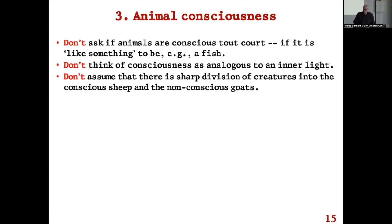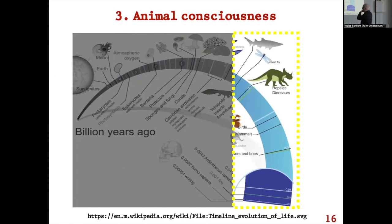Don't think of consciousness as analogous to an inner light. Don't assume a sharp division of creatures into the conscious sheep and the non-conscious goats. Don't think that in the course of evolution there was some point at which the inner lights came on and creatures got into the privileged realm of being conscious. Not only is it unhelpful — it's a positively distorting and pernicious way of thinking about animals.